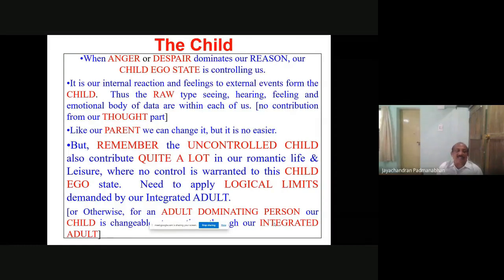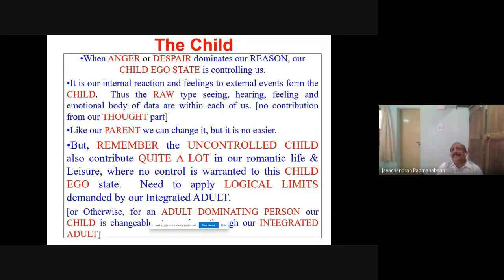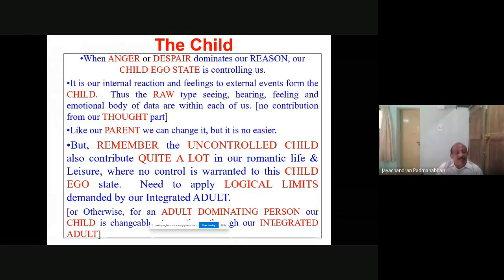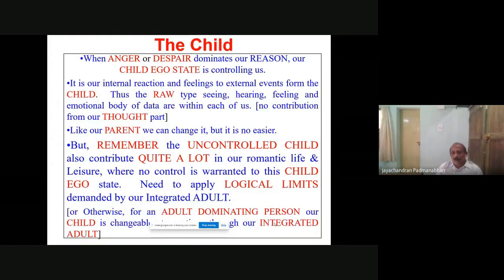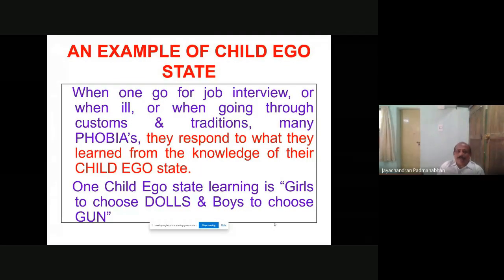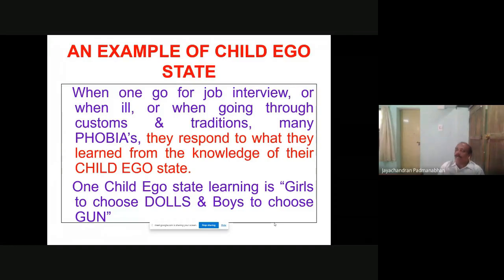From the child — that raw type of seeing, hearing, feeling, and emotional body of data is within each of us. No contribution from the thought part — when there is no thought part, it's the child part. We can change it but not that easily. For example, even my teachers were not knowing all this. When my child ego state was very high, people were appreciating me and I was happy. But later I came to know that that child part — the internal reaction and feeling with no contribution from the thought part — is actually an illness. Learned helplessness, all the sorrows, unwanted elation — all these bipolar behaviors are coming — then it is an illness.